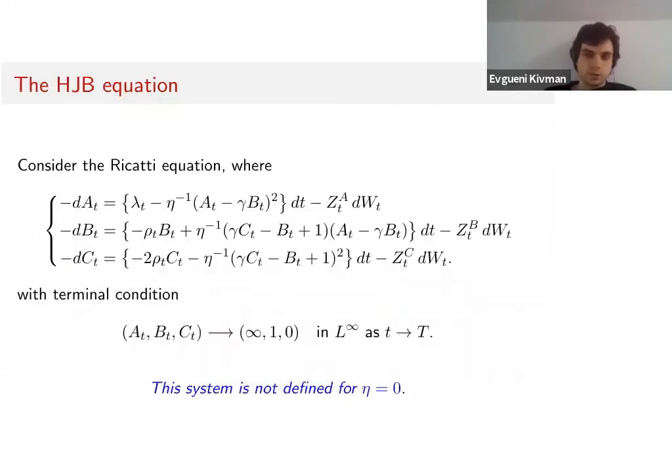First, we recall what Graewe and Horst did. They proved that we have to consider this Riccati equation for A, B, and C with terminal conditions. Due to the liquidation constraint X_T equals zero, we have this kind of singularity—A_t goes to infinity as t approaches T. This system is not defined for η equals zero, so we cannot just plug in η equal to zero.